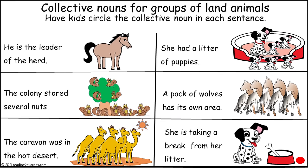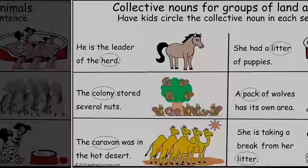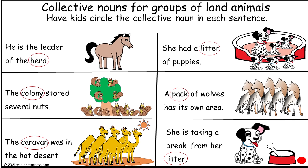Again, have kids circle the collective noun in each sentence. This is a completed example. 'He is the leader of the herd' — herd is the collective noun. 'The colony stored several nuts' — colony. 'The caravan was in the hot desert' — caravan. Moving to the next column: 'She had a litter of puppies' — litter. 'A pack of wolves has its own area' — pack. And 'She is taking a break from her litter' — litter is the collective noun.